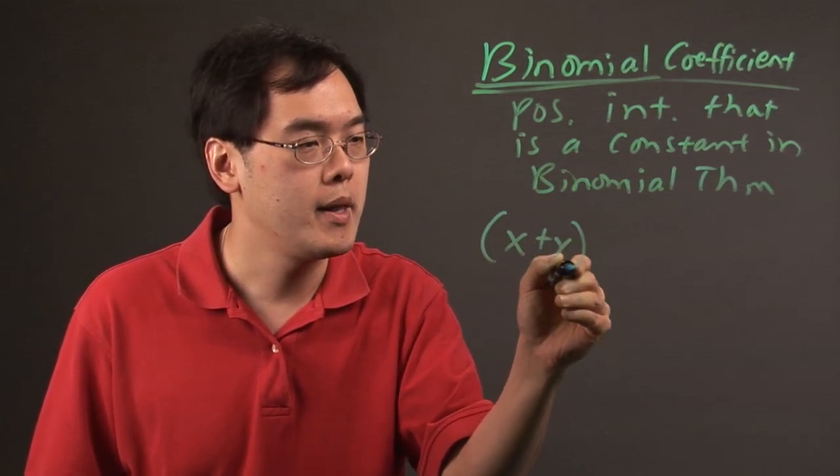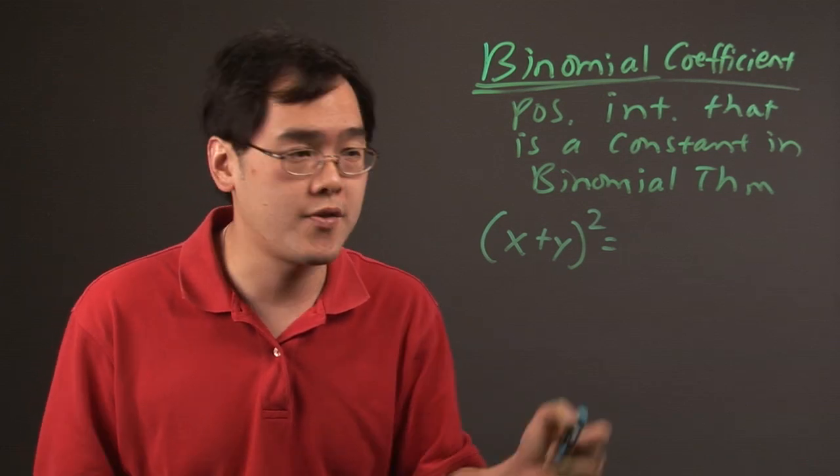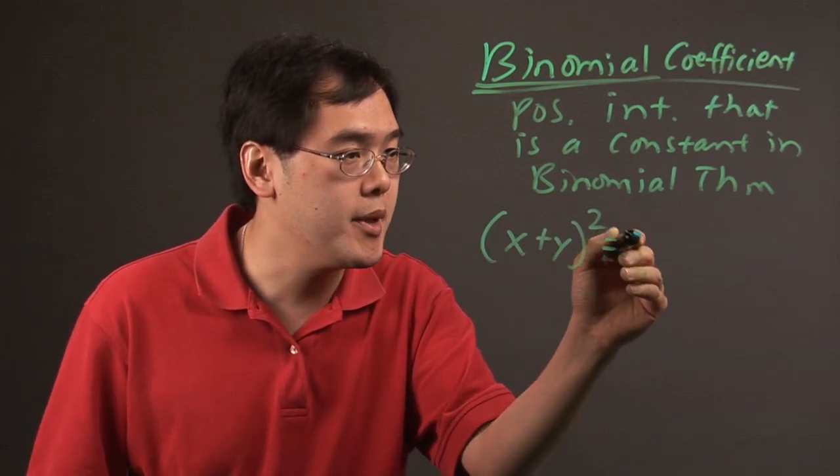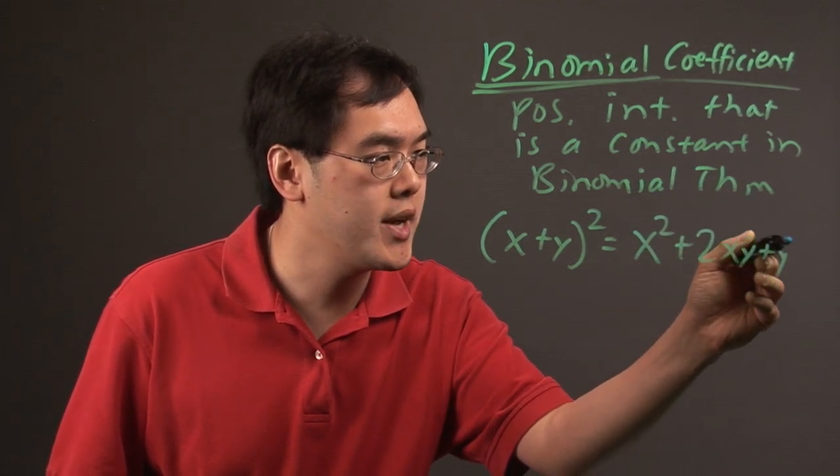If you have x plus y squared, for example, the binomial theorem allows you to multiply things fairly quickly. Now in the interest of time here, you know this is going to be x squared plus 2xy plus y squared.